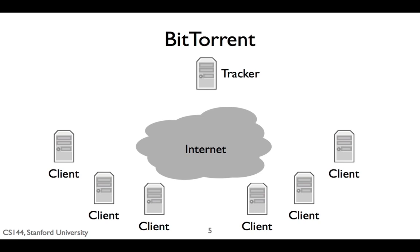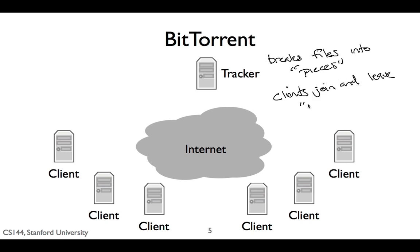Let's look at a second application: BitTorrent. BitTorrent is a program that allows people to share and exchange large files. Unlike the web, where a client requests documents from a server, in BitTorrent a client requests documents from other clients. So that a single client can request from many others in parallel, BitTorrent breaks files up into chunks of data called pieces. When a client downloads a complete piece from another client, it then tells other clients it has that piece so they can download it too. These collections of collaborating clients are called swarms, and we talk about a client joining or leaving the swarm.